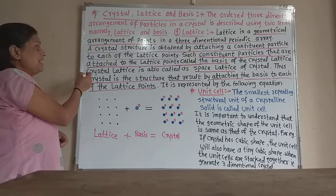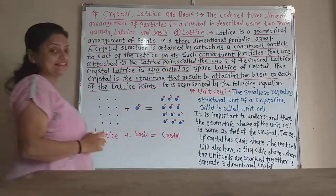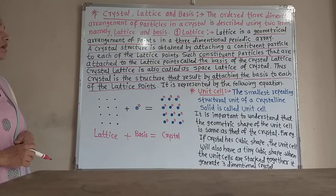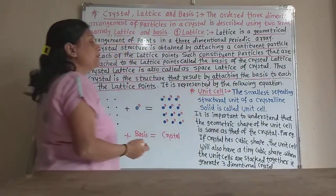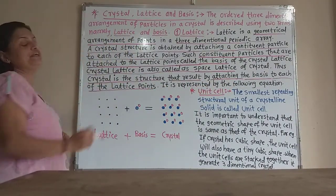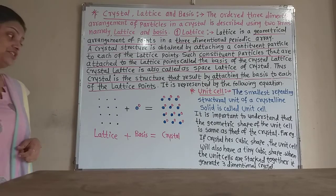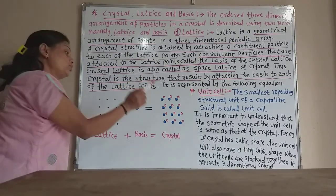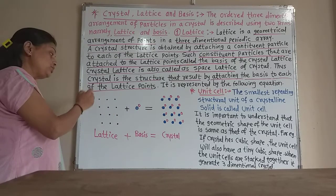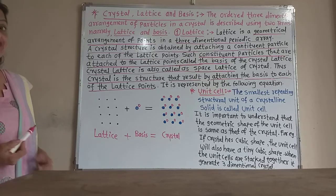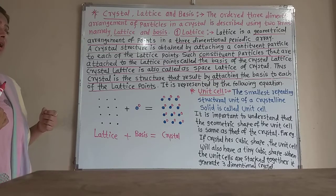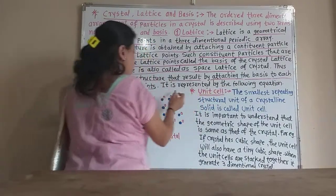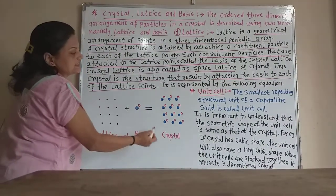A crystal lattice is also called a space lattice — remember that. A crystal structure that results by attaching the basis to each of the lattice points is called the crystal. This relationship is represented by the following equation: lattice plus basis gives crystal.